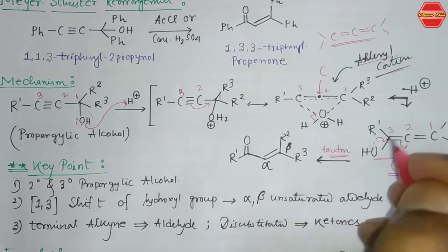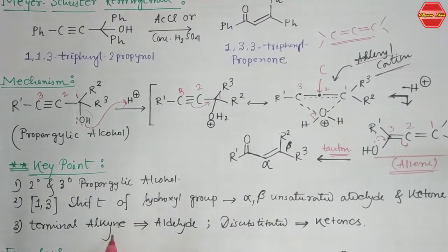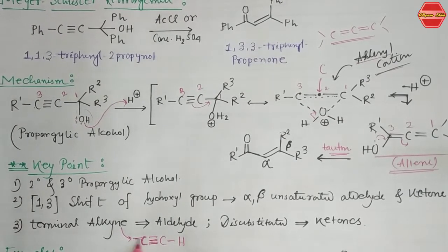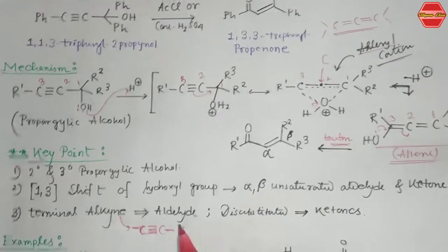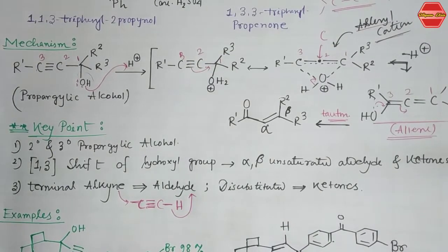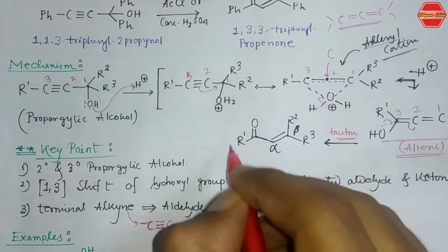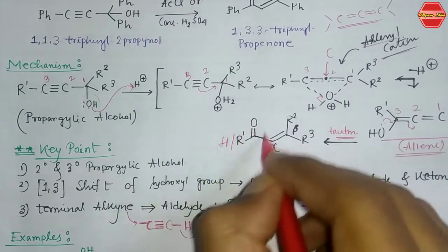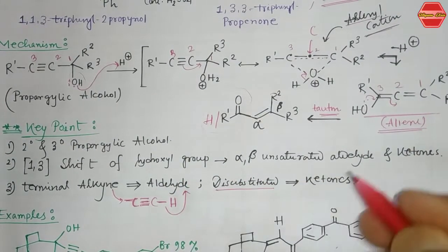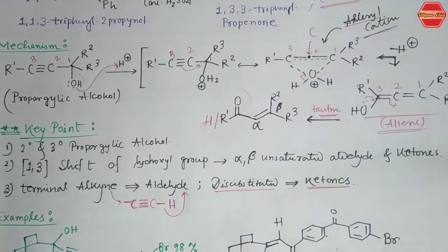If you have a terminal alkyne — meaning C≡CH with a hydrogen at the terminal position — then it will form an aldehyde, because when R¹ is replaced by hydrogen you get an aldehyde moiety. If you have a disubstituted alkyne, you get the ketone derivative. So terminal alkyne gives an aldehyde and disubstituted alkyne gives a ketone — that is the Meyer-Schuster rearrangement.